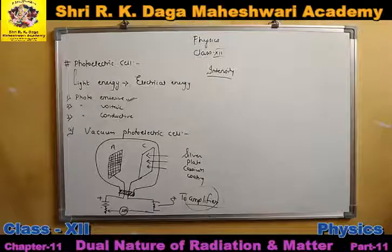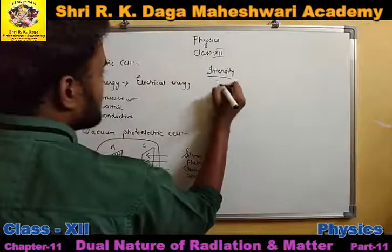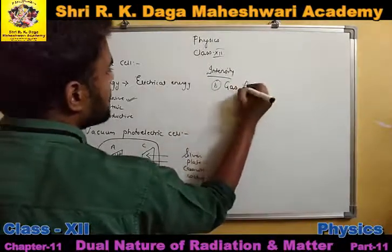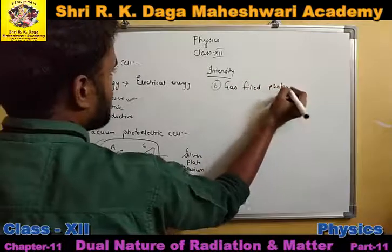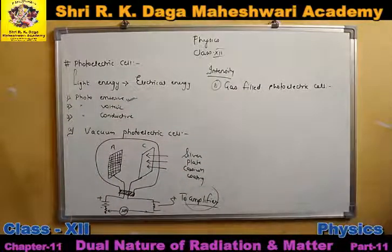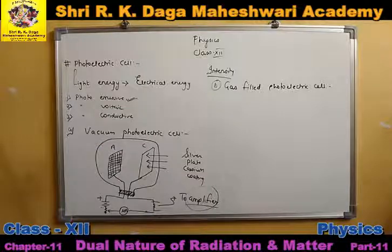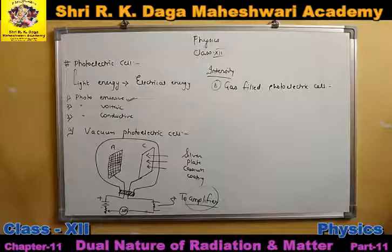This vacuum photoelectric cell is one type. The second type is the gas-filled photoelectric cell. As the name suggests, in this cell the vacuum is not created — instead, some inert gases are filled in the chamber. Inert gases, which are not very reactive, such as argon and neon, are filled in this chamber. It has not been vacuumed. This type of cell is called a gas-filled photoelectric cell.